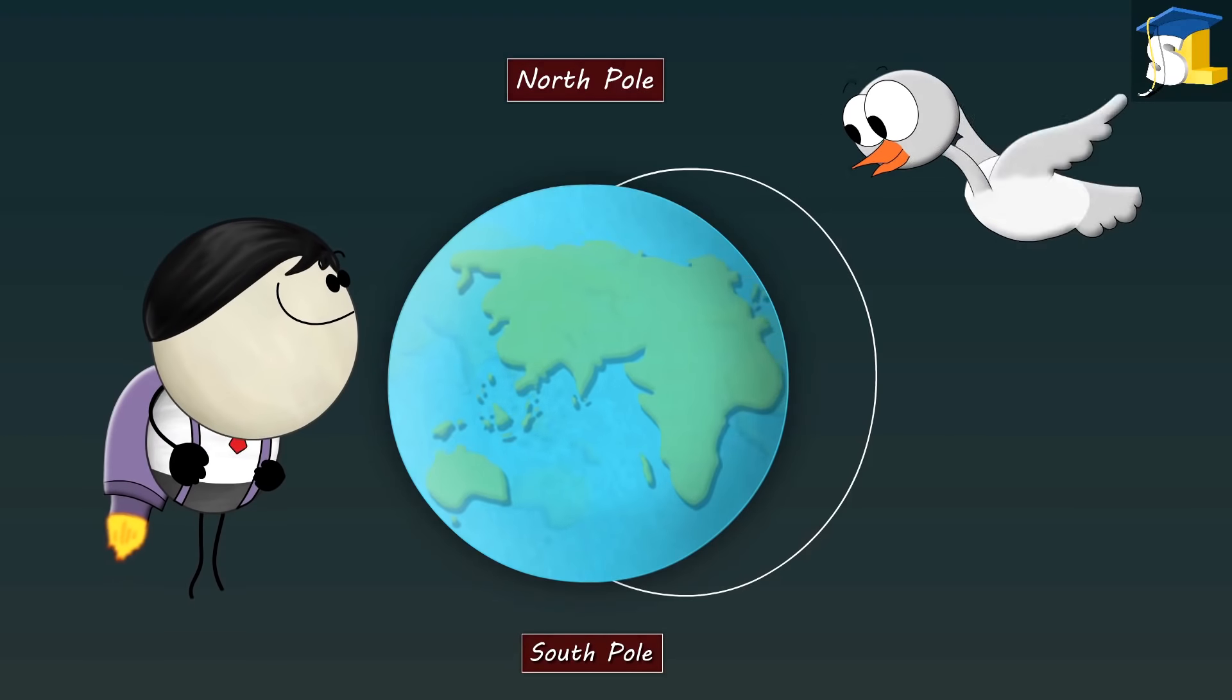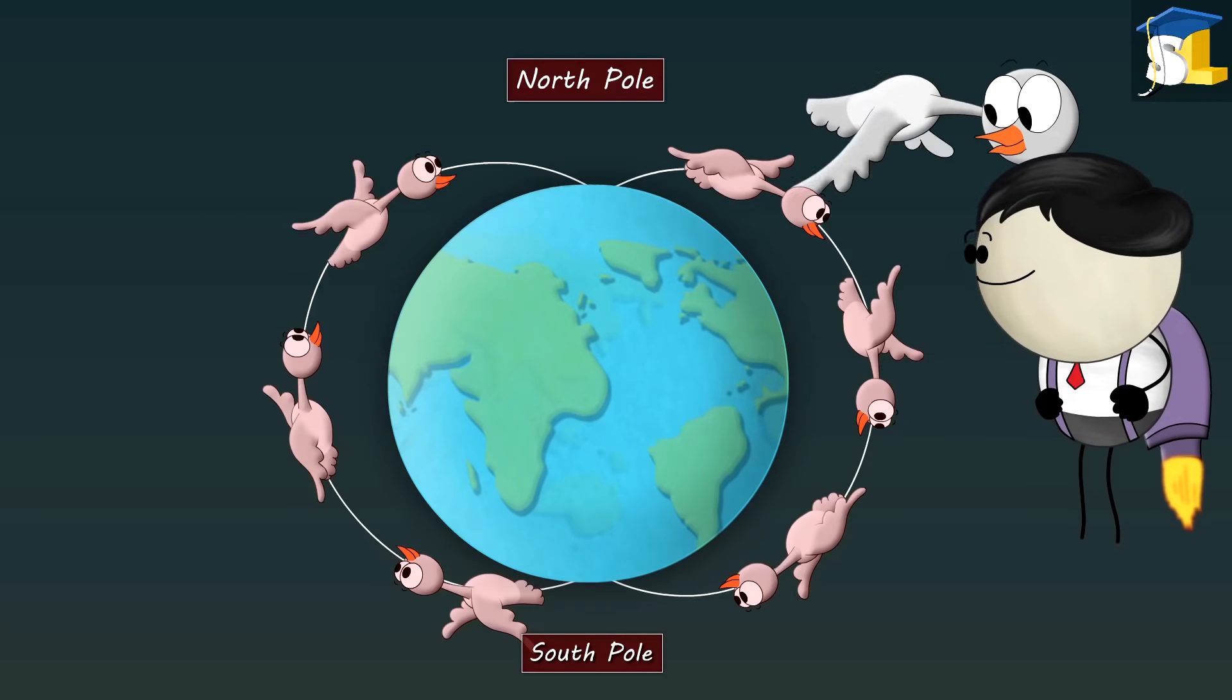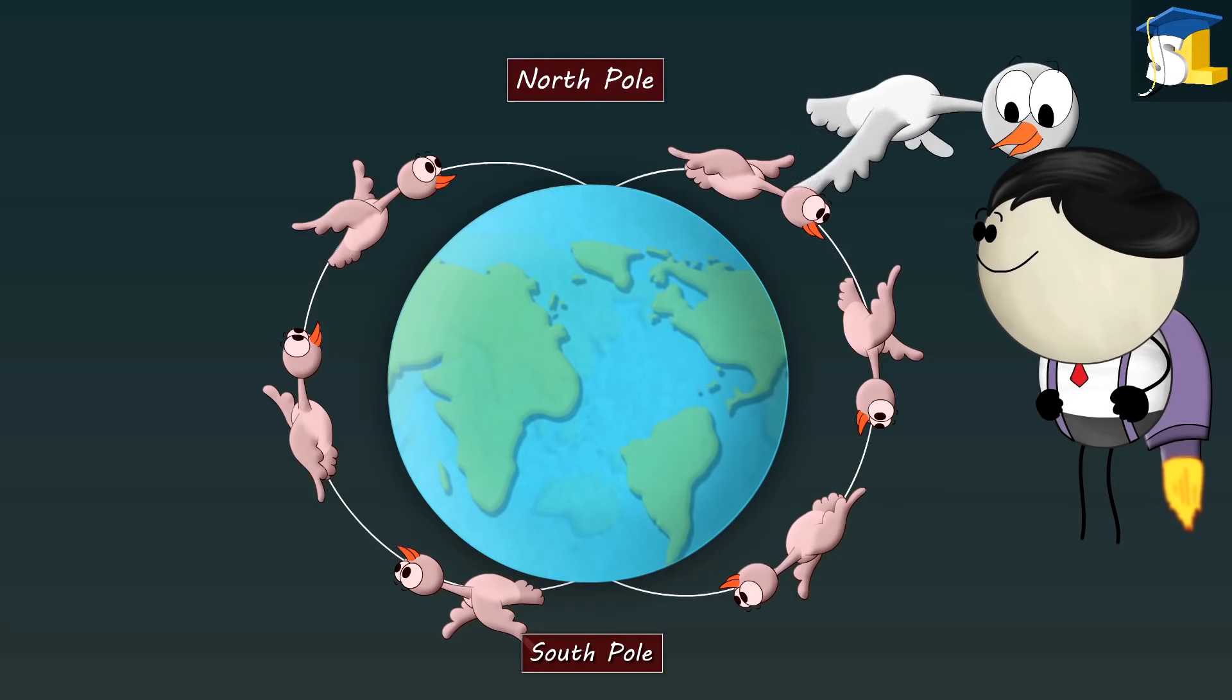When migratory birds have to travel from north to south, or vice versa, they align themselves with the magnetic field lines and travel to their location.